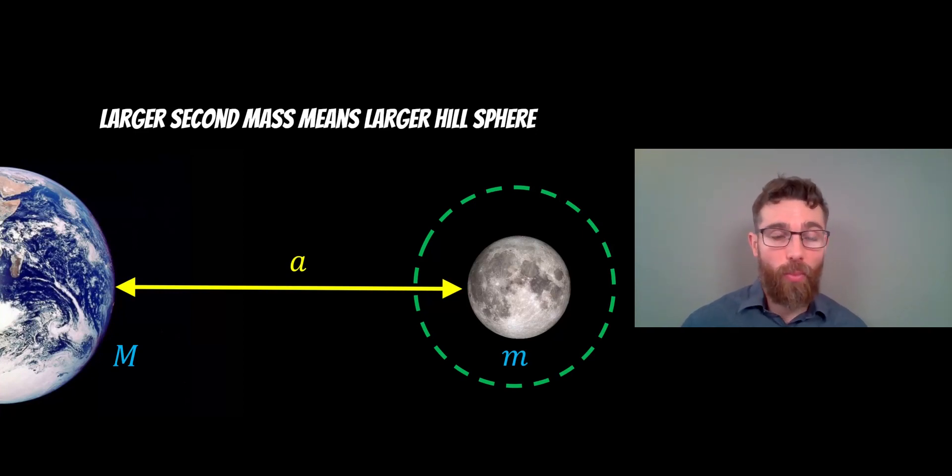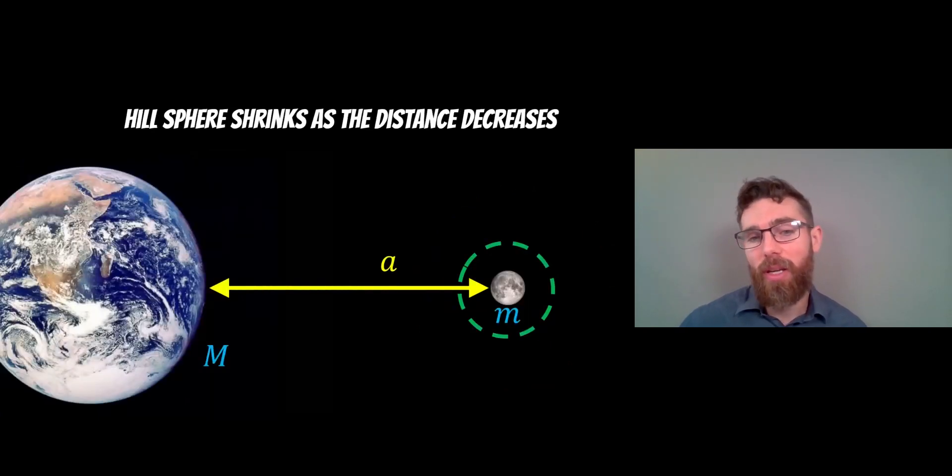If Earth was much more massive, then it would shrink the hill sphere because it would have more of an influence on it. As the distance between the two objects decreases, then the hill sphere also shrinks as well, because if it's closer to the Earth, then the Earth is going to have more of an influence on a smaller object that's close to the Moon.